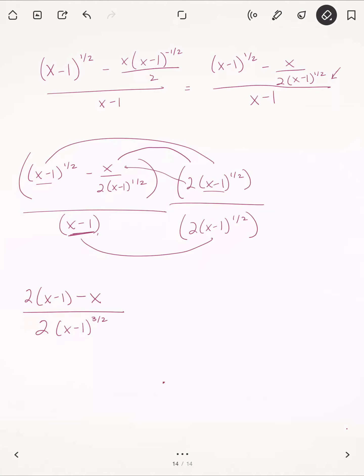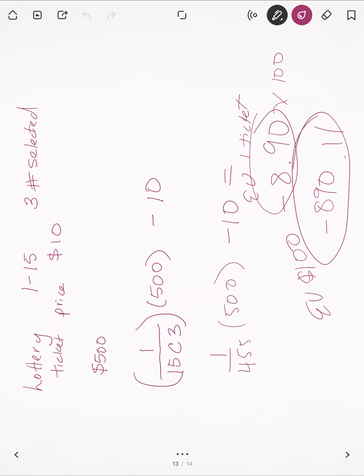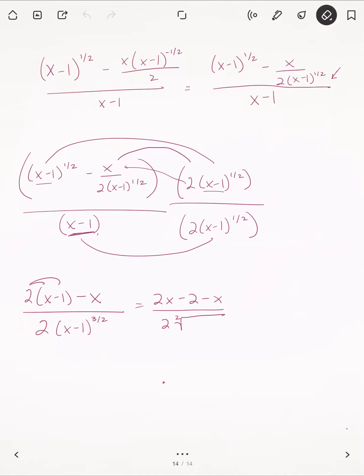Alright, let's simplify this a little bit further. I'm going to extend this 2 to get 2x minus 2 minus x there, divided by 2, and I'm going to just go ahead and clean this up a little bit. I don't need to write the square in there, that was silly.